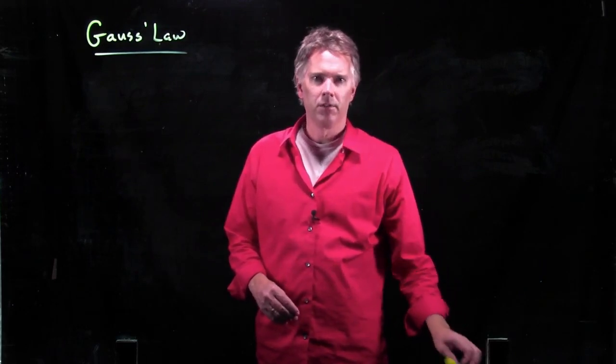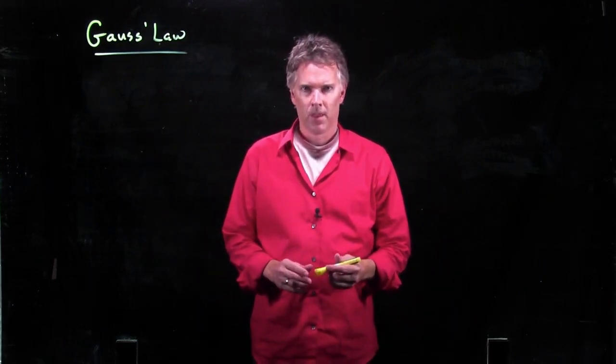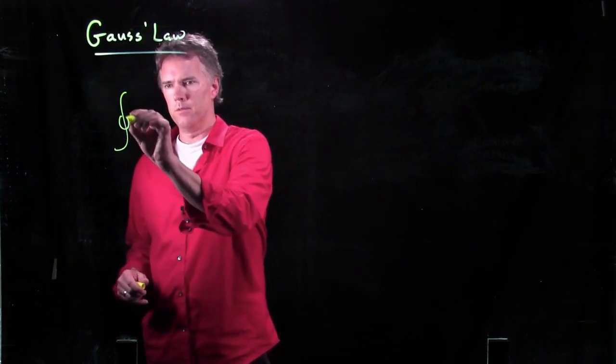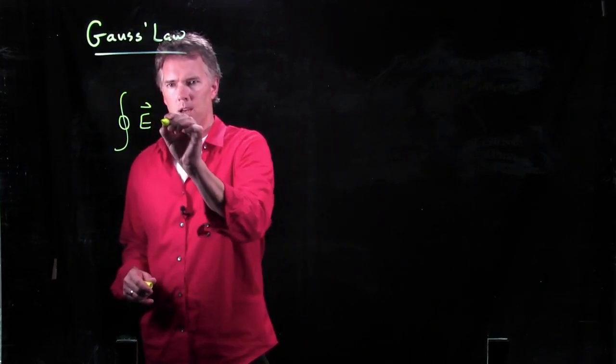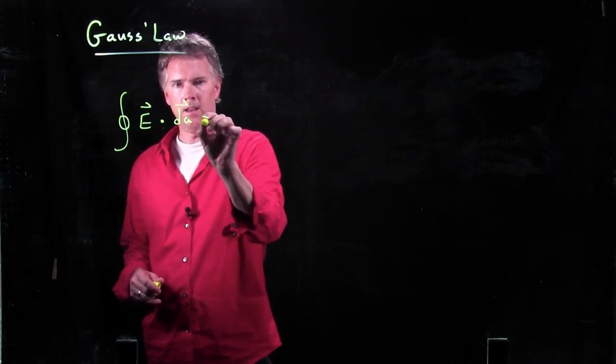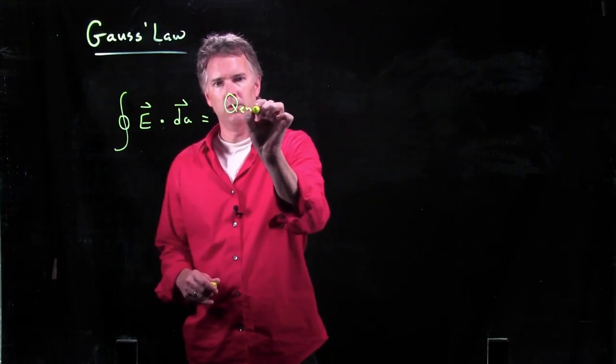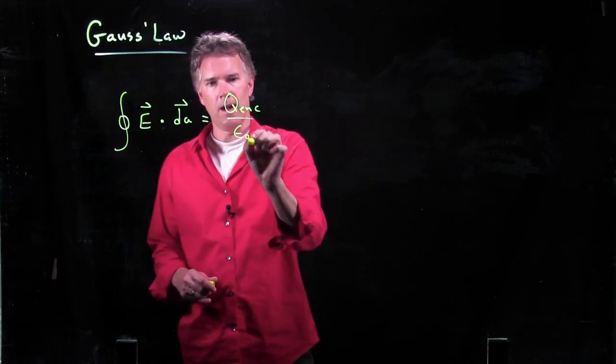So how do we write Gauss's Law mathematically? The way we write it is the following: integral of E dot dA equals Q enclosed over epsilon naught.